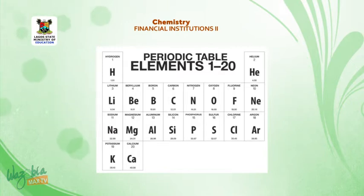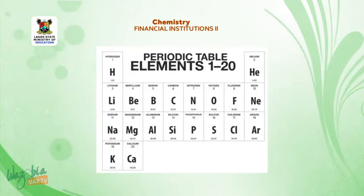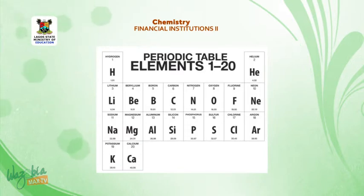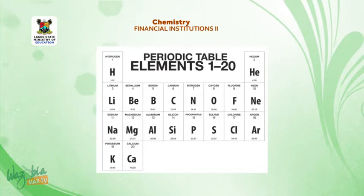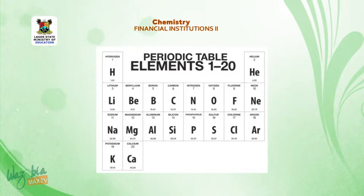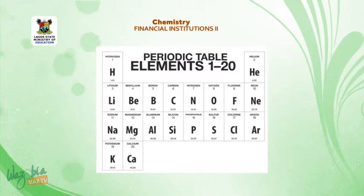In group 2, we have beryllium, magnesium, and calcium. In group 3, we have boron and aluminium, and so on down to group 8. We have 4 horizontal rows. In the first period, we have hydrogen and helium. In the second period, we have lithium down to neon. In the third period, we have sodium down to argon. And in the fourth period, we have potassium and calcium.